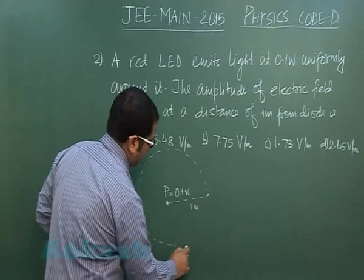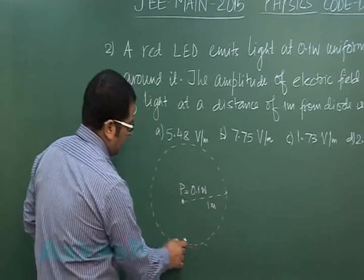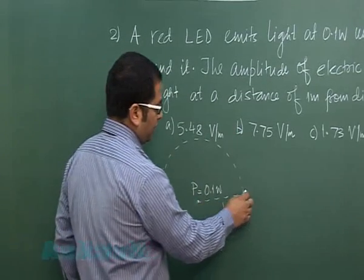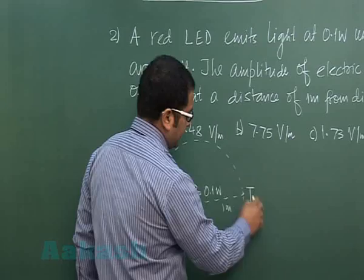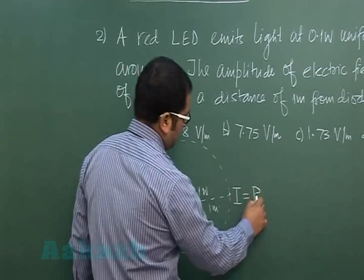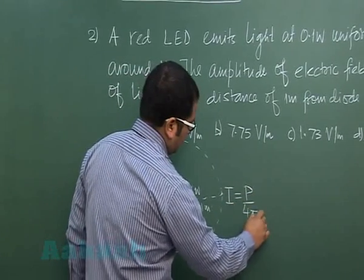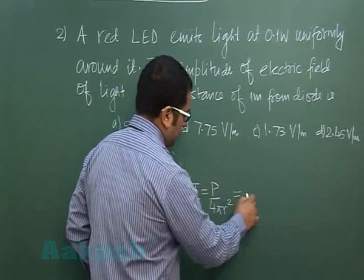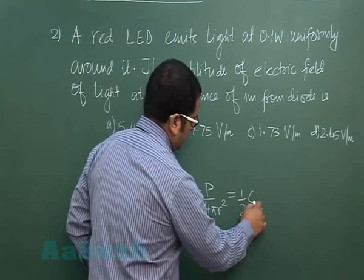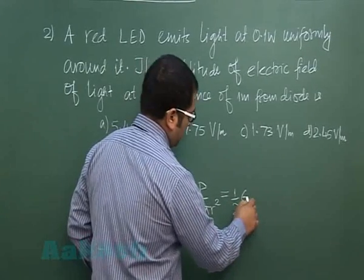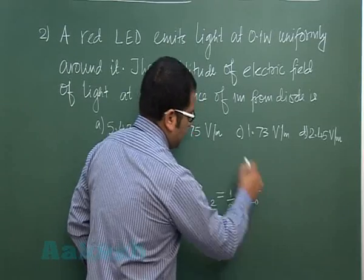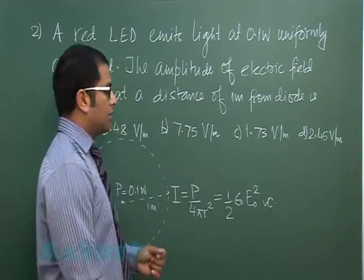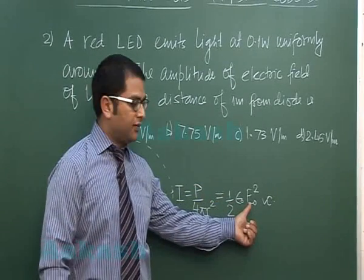So energy that's been distributed spherically, so at this particular point if I calculate intensity of light, that is P by 4 pi r square. And that intensity can always be related with the electric field component as half epsilon naught E naught square multiplied by C, where E naught being the amplitude of the electric field, C being the speed of light.